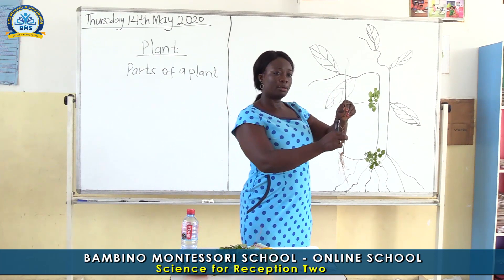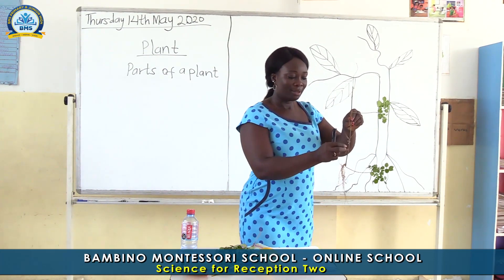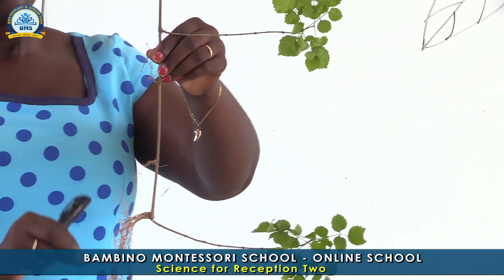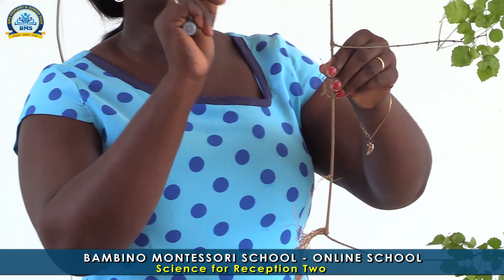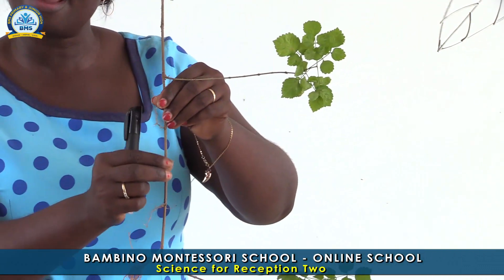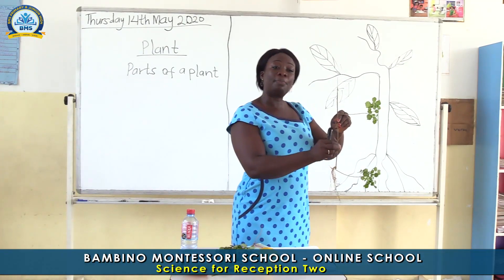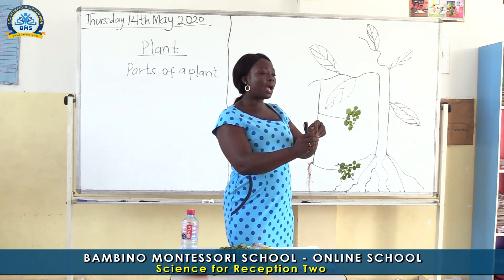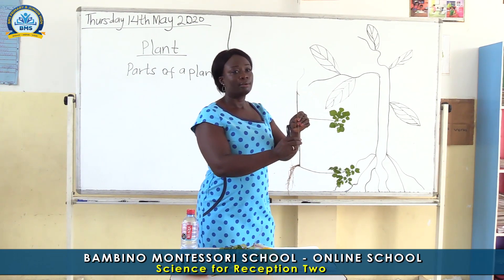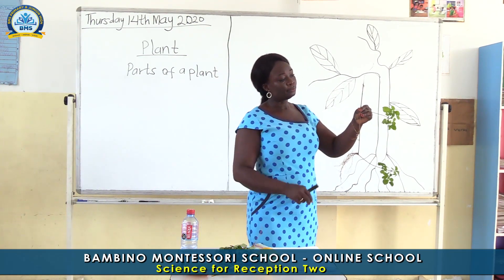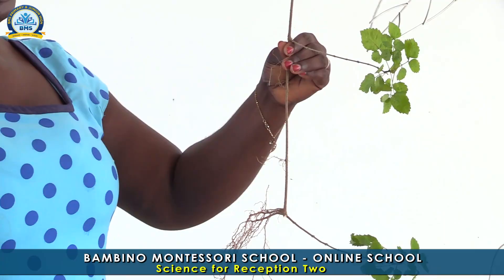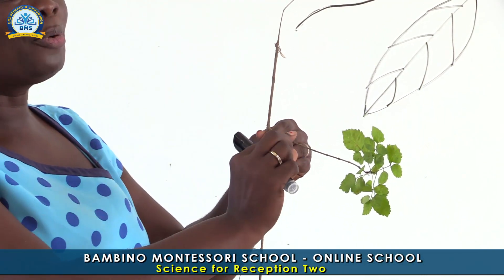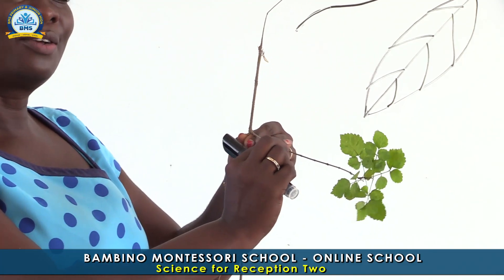Now when you look at the middle part here, who can tell me the name of this part? I think I know — it's a stem. Yes, this part of the plant is called a stem. Now when you look further you see another thing also on it.